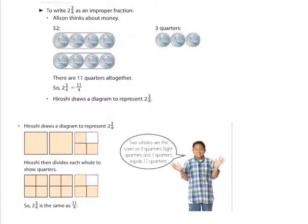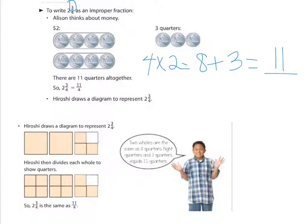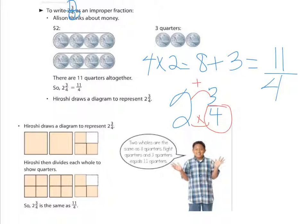Now, sometimes we're going to want to go the other direction and take our mixed number and make it into an improper fraction. Say I wanted to write two and three-fourths as an improper fraction. You could just look at two complete groups of four — so four times two is eight, plus the three that's on top equals eleven. So it would be 11 out of four — 11 fourths. Your denominator stays the same.